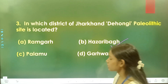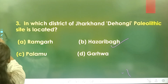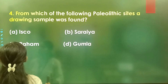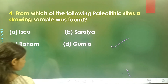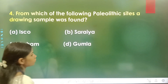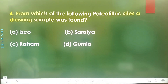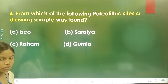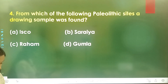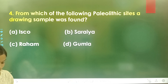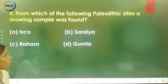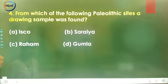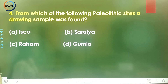Question number 4: From which of the following Paleolithic sites was a drawing sample found? Option A is Isko, option B is Saraiya, option C is Raham, and option D is Gumla. The correct answer is option A, Isko.